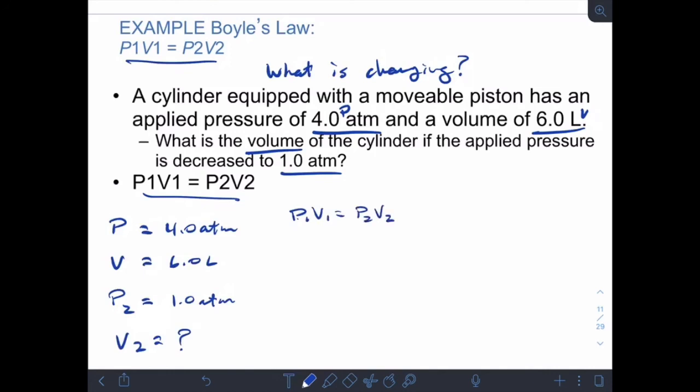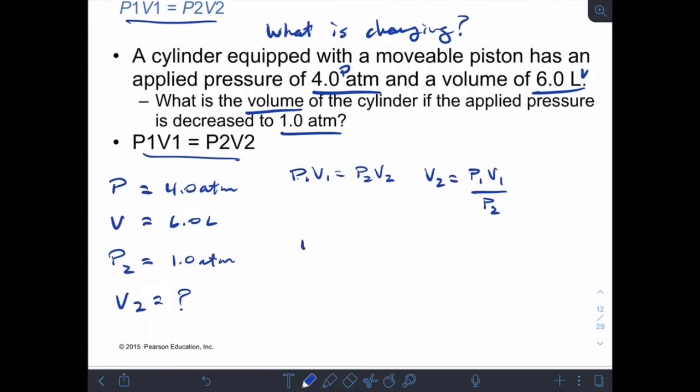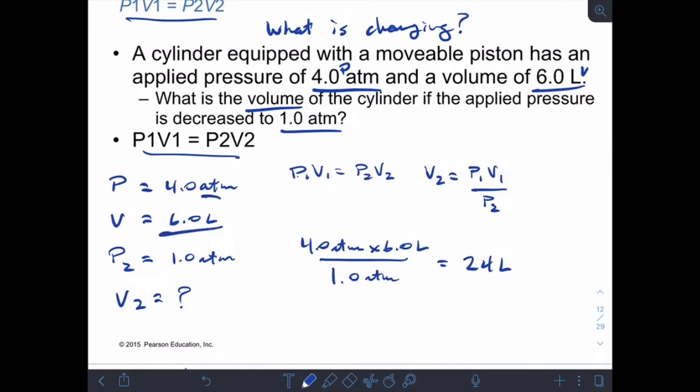So Boyle's Law. What we want to solve for is V2, so I'm going to rearrange my equation and say V2 equals P1 V1 over P2. And then I can simply plug in my numbers. Four atmospheres times six liters divided by one atmosphere gives me 24 liters. So here's where you want to use that relationship of pressure and volume and determine whether or not this answer makes any sense. So we have a pressure of four atmospheres, and then we decrease the pressure. So if the pressure goes down, that means the volume should go up. Our initial volume was six liters. And our volume has gone up to 24 liters. So by that inverse relationship, we can see that our answer, at least on that level, makes sense.